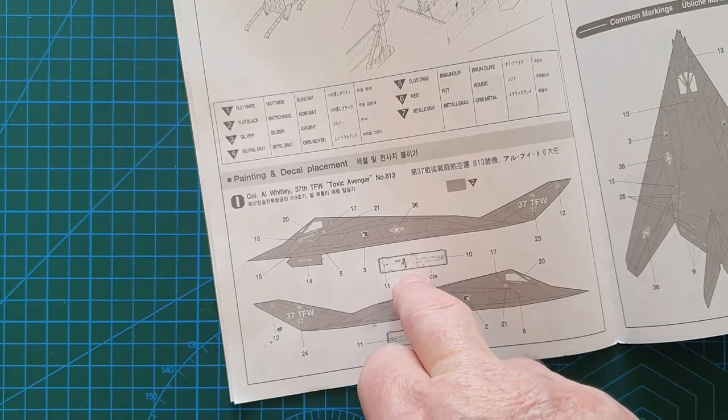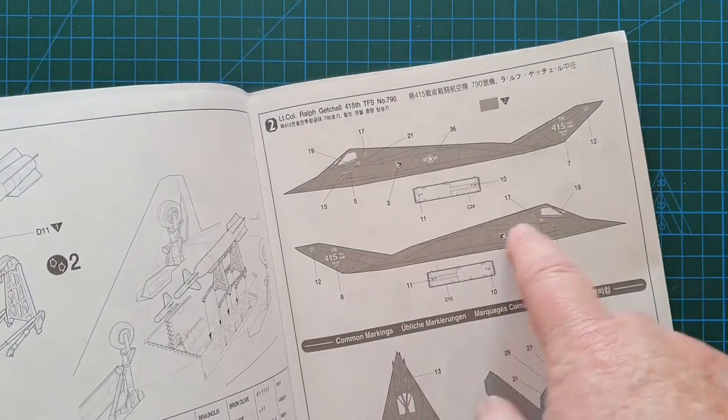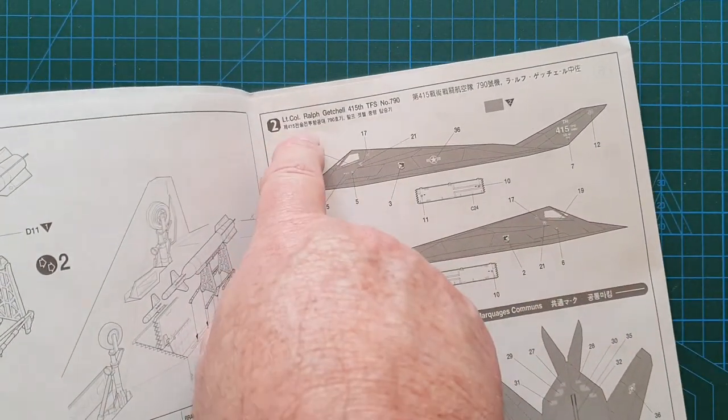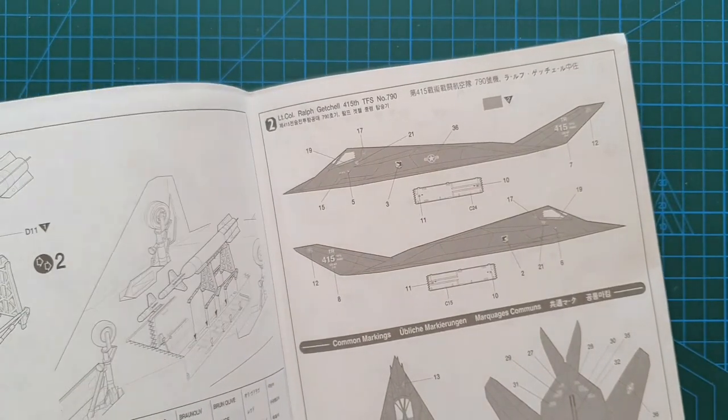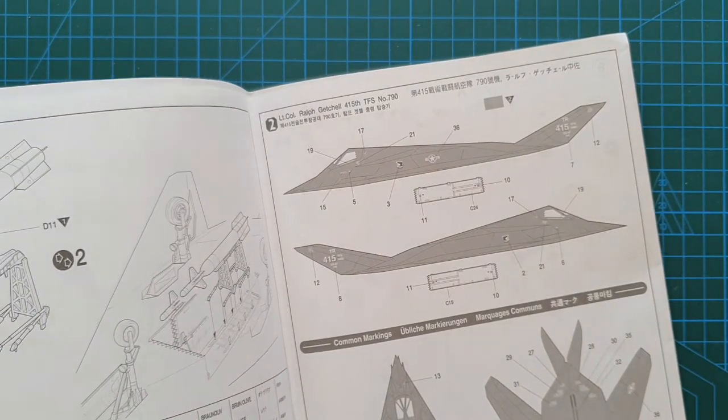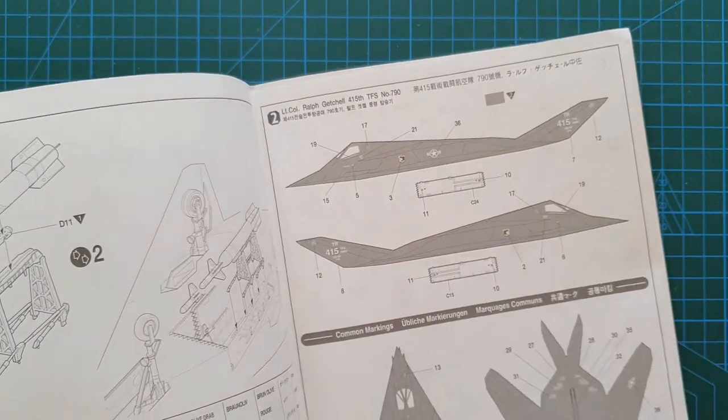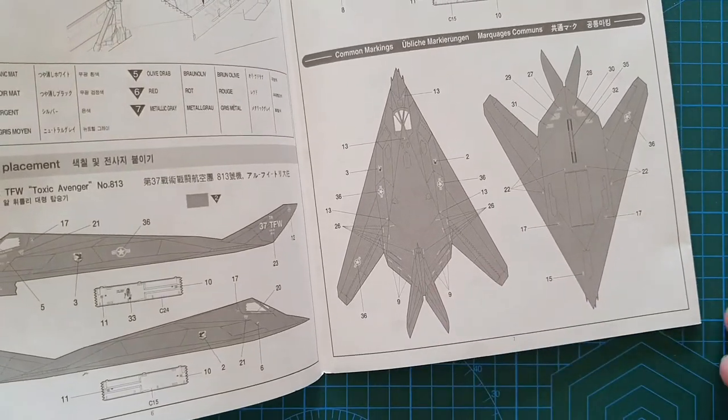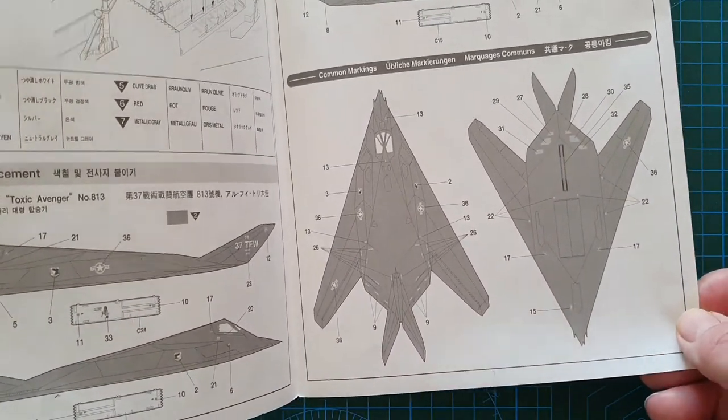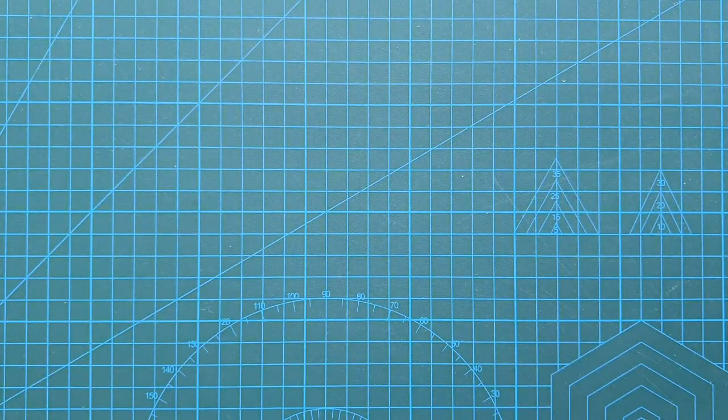For marking, this is for the Toxic Avenger which is Colonel Whitley. The Toxic Avenger insignia goes inside on one of the bomb bay doors. This is just a standard fighter wing. This is Lieutenant Colonel Gretzel, so fairly straightforward low visibility insignia. And then the same again, top and bottom, standard insignia for the stealth fighter. That's it, that is your instructions.